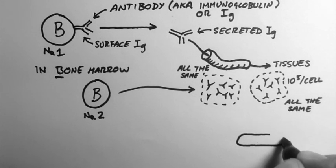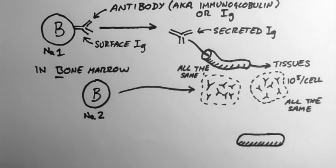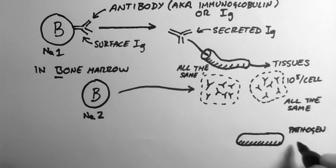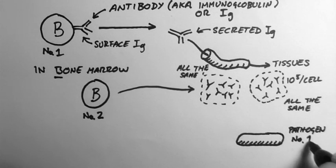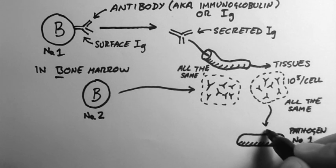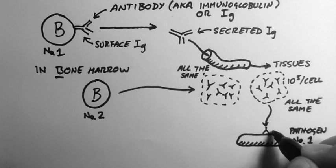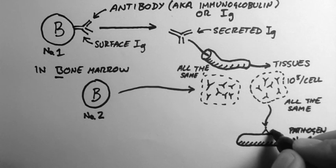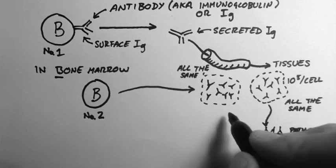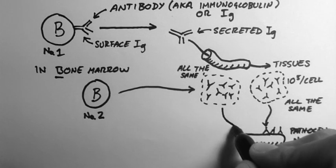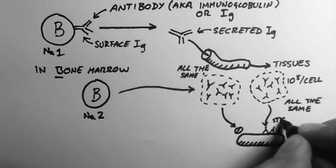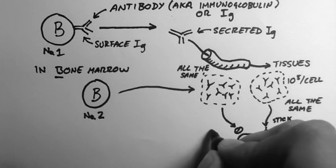Now this is important because you need antibodies that are specific for different pathogens. So for example, here's pathogen number 1. The antibodies of B-cell number 1 stick onto the surface of this pathogen. However, those of B-cell number 2 do not. So these stick and these don't stick.